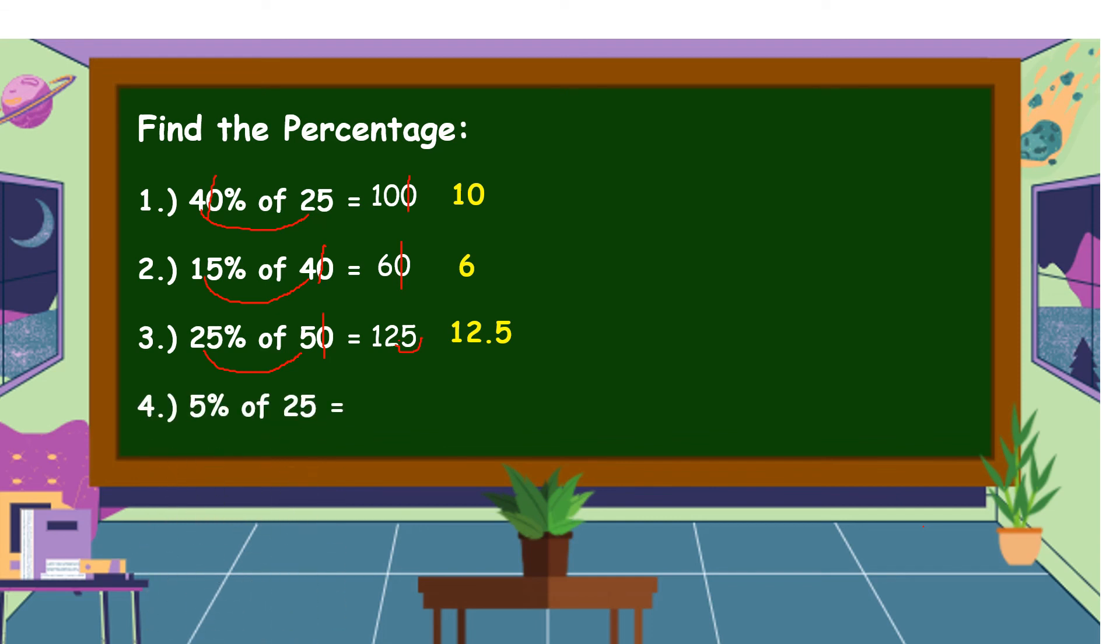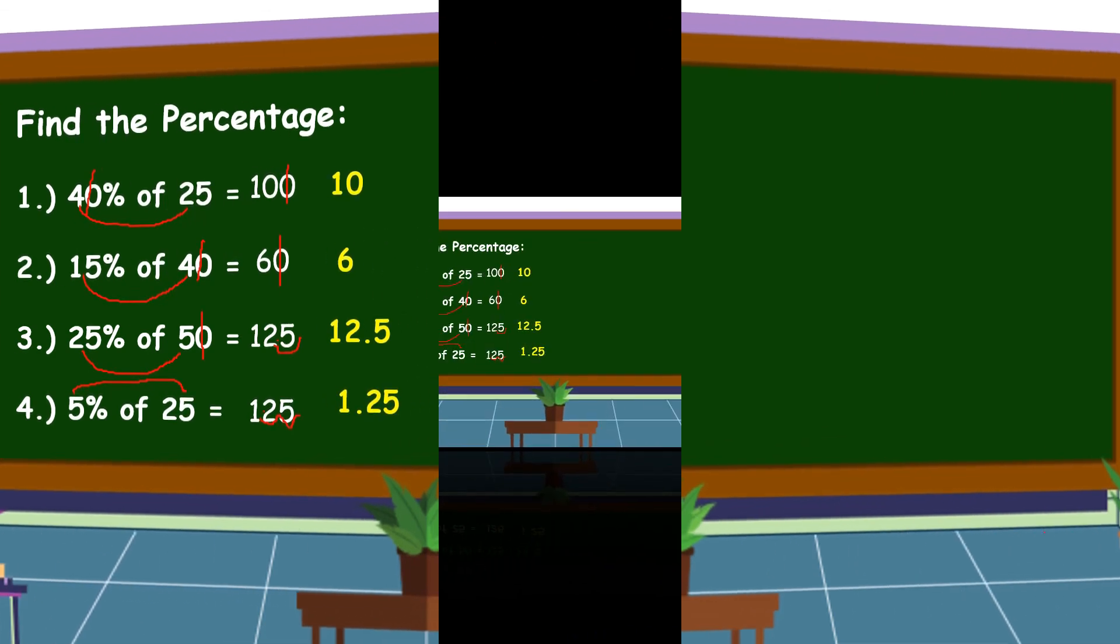Next example, 5% of 25. We don't have 0s here. All we have to do is multiply directly, 5 and 25. So, 5 times 25, the answer is equal to 125. Then, we're going to move the decimal point two places, going to the left. 1, 2. The decimal point is in between 1 and 2. Therefore, 5% of 25 is equal to 1 and 25 hundredths.